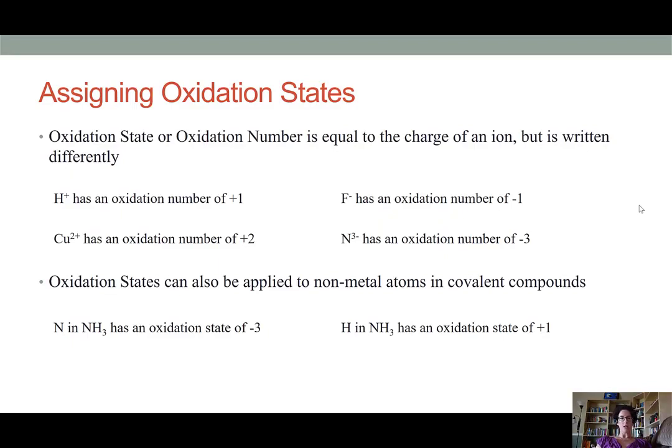While we might write the charge on a hydrogen ion as hydrogen with a superscript positive, the oxidation number of hydrogen is written as positive 1. Similarly, copper 2 plus has an oxidation number of positive 2. Notice that with oxidation numbers, we do include the ones, and not simply the positive sign.